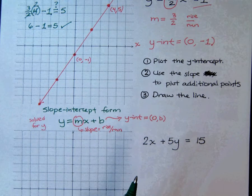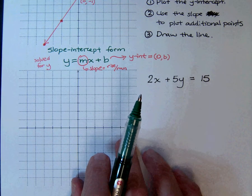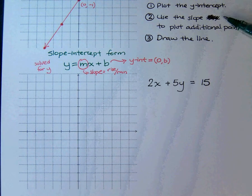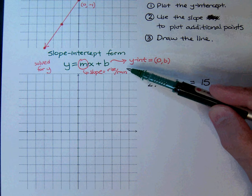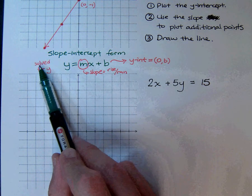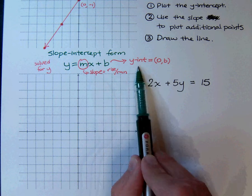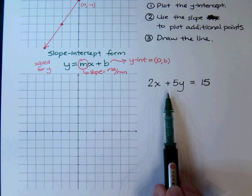Okay, let's look at the other example that we have. We're going to keep our steps here. Here's the slope-intercept form, but remember, it has to be solved for y in order for us to get the slope and the y-intercept. This equation is not solved for y.